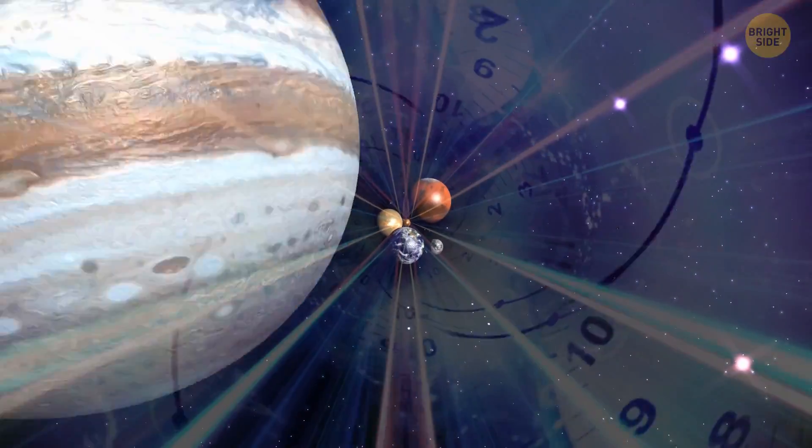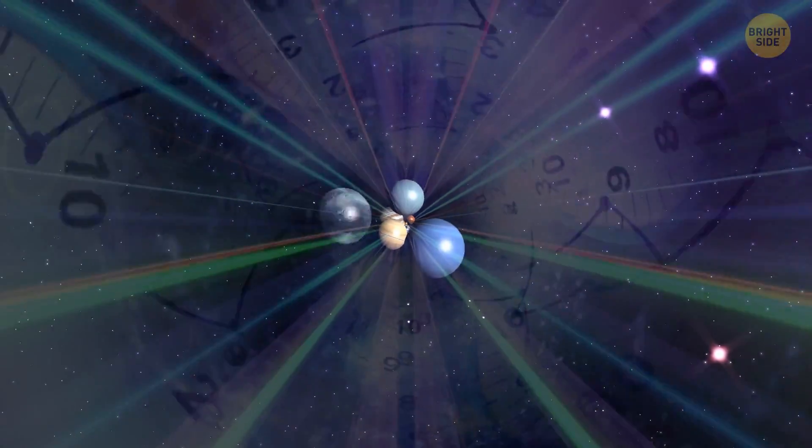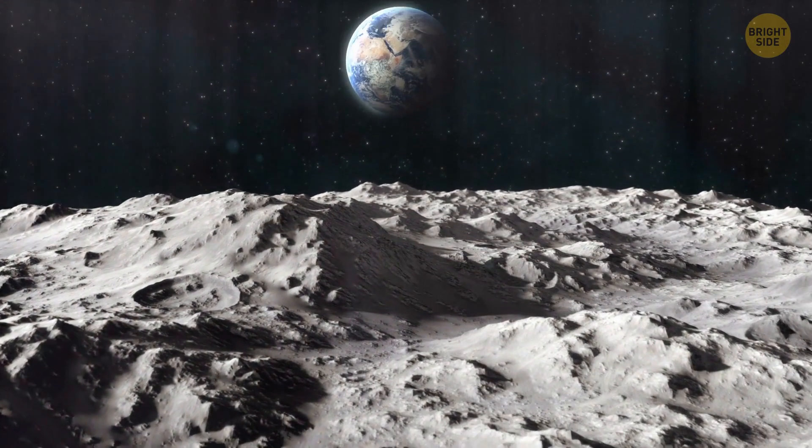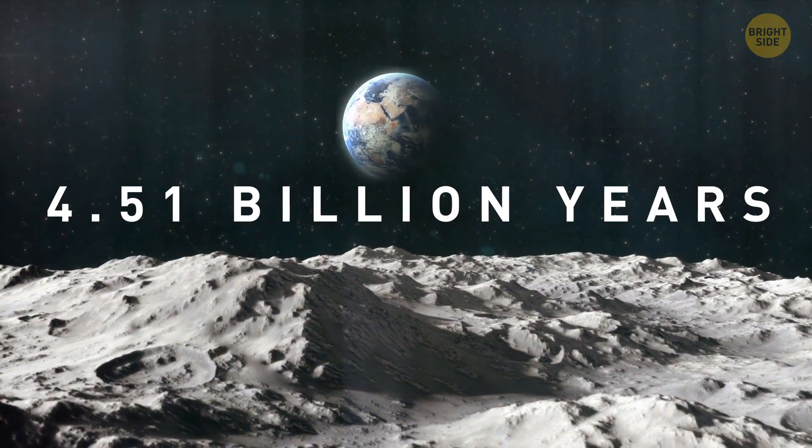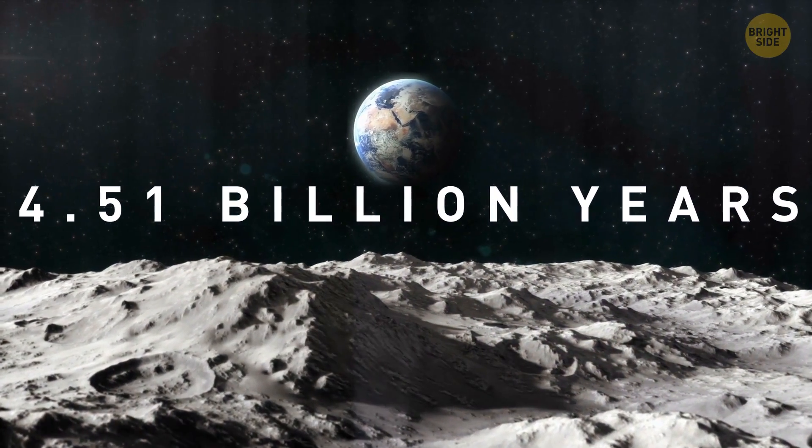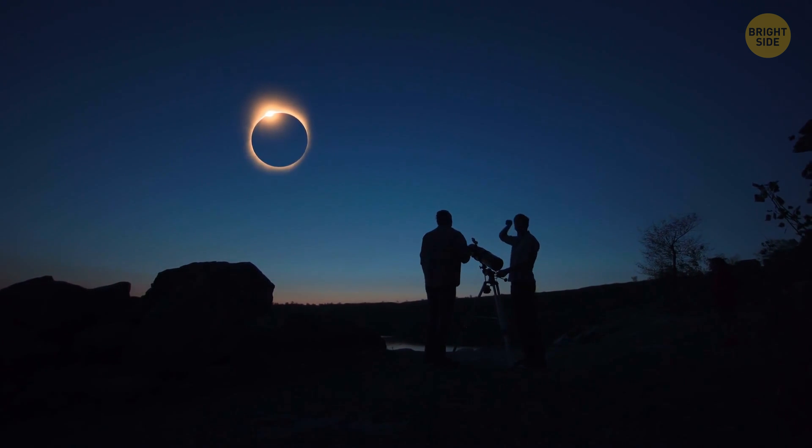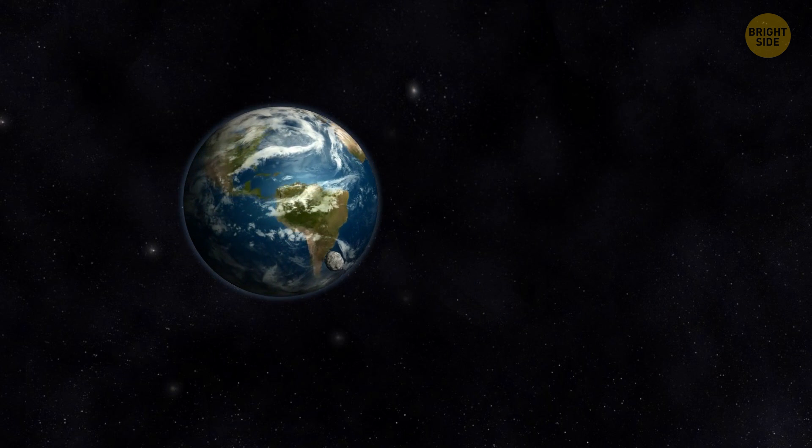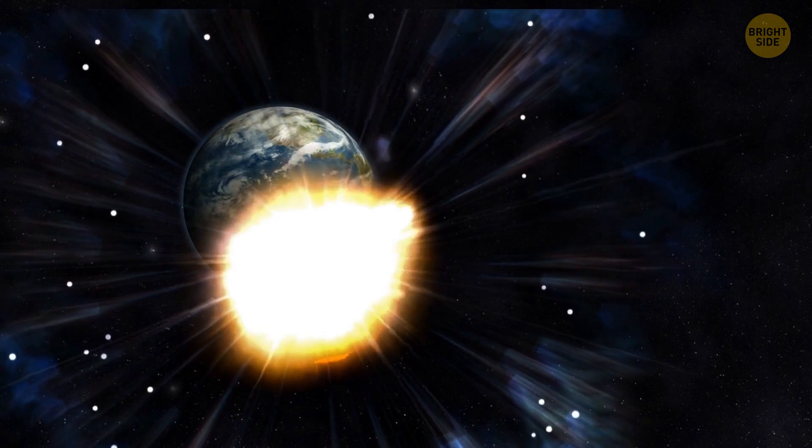To explore what will happen, let's go back a little to put it all into perspective. The moon has been hanging around us, literally, for 4.51 billion years. There are a few theories as to how the moon came into being. The main one is that it formed when a large object smashed into the young Earth.